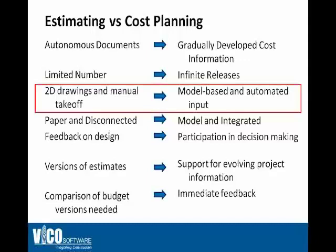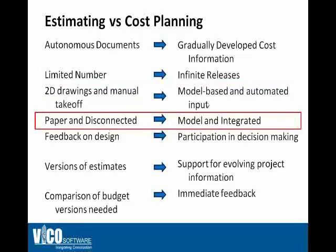In 2D estimating, the quantity takeoff is manual or semi-automated — it is a difficult process. The 5D cost planning approach uses model-based automated input, complemented with manual entry when necessary. The construction-caliber quantities derived from 3D models drive not only the 5D cost plan but also the 4D schedule. With paper-based cost estimating, your input is disconnected from the design. The model in 5D cost planning provides direct visual feedback for any selected cost item, so the interaction with the design and understanding where cost is coming from is much better.